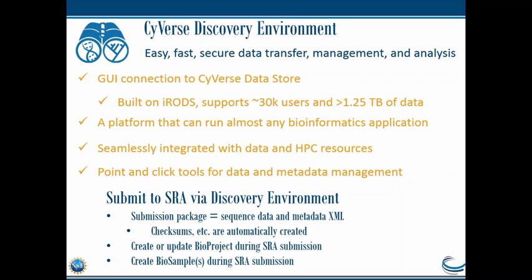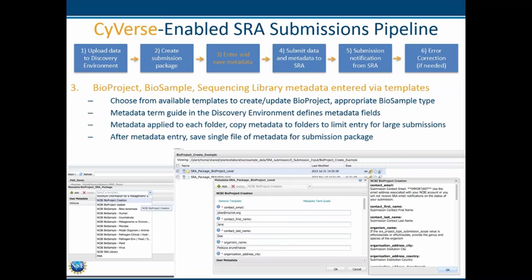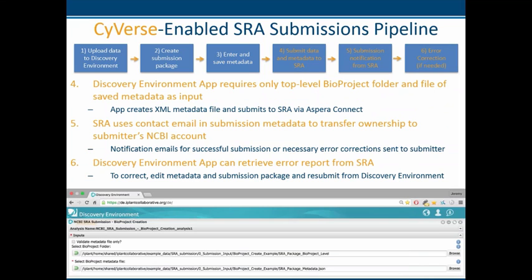You can also create or update BioProjects as well as BioSamples. Here's a pipeline view of the Cyverse-enabled SRA submission. There are efficient both command-line as well as GUI tools for submitting to SRA. You can put in the BioProject, BioSample, and all the sequencing metadata via templates, and those templates are simply uploaded from the NCBI templates. Finally, you can use the contact email to transfer ownership over to your NCBI account, and the discovery environment will retrieve an error report so you can correct things and resubmit. Anyone can use Cyverse for free upon creating an account.